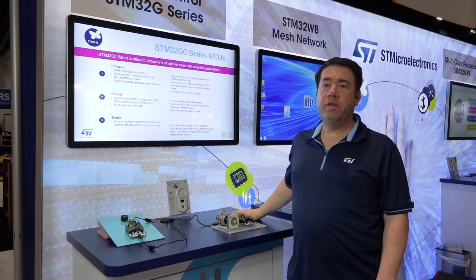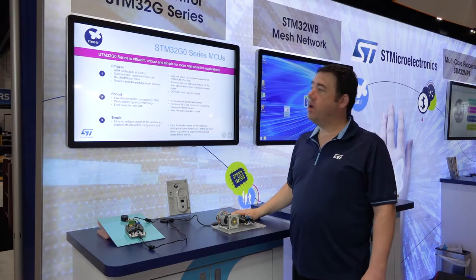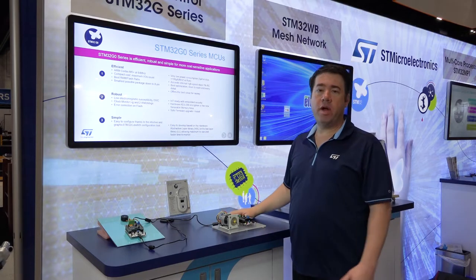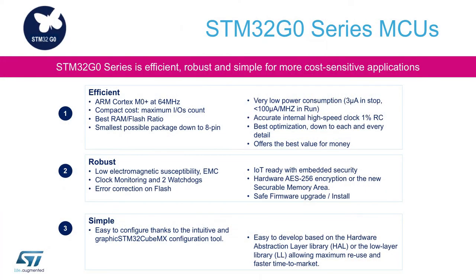The STM32G0 is an evolution of the STM32F0 product line with many significant enhancements. It features enhanced performance at 64 megahertz with a Cortex-M0+. We've reduced the number of VDD-VSS pairs to allow more IO in a given package size. The silicon robustness has been enhanced with lower electromagnetic susceptibility for EMC, clock monitoring with two watchdogs, and error correction on the flash.